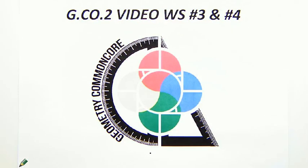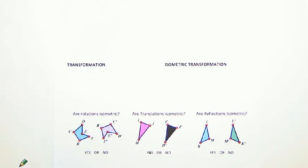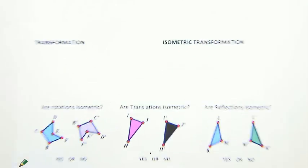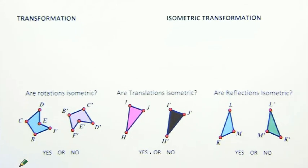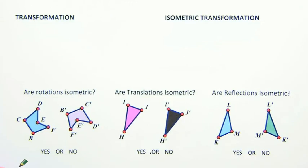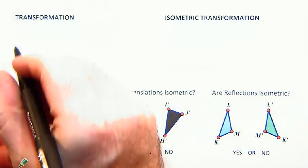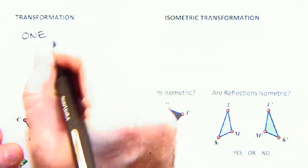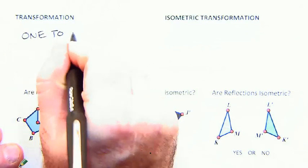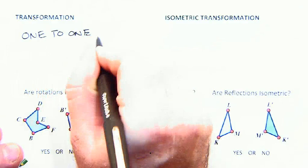We're still looking at transformations, extending the discussion we had before on transformations a little bit. Now we're talking about special types of transformations. But first, let me go back to what a transformation is. It's a one-to-one mapping.